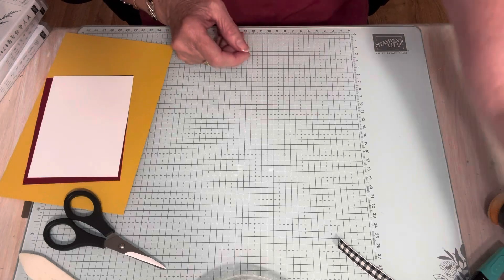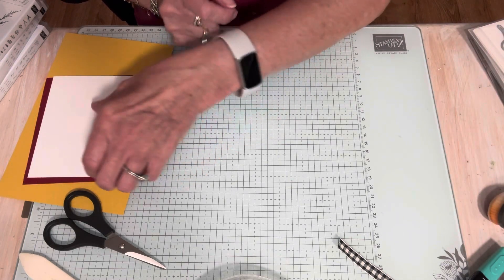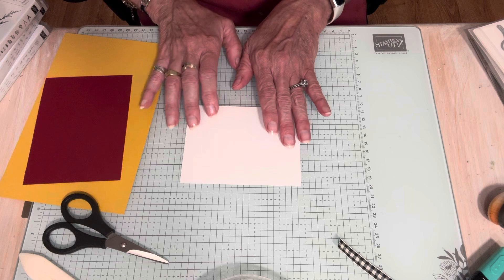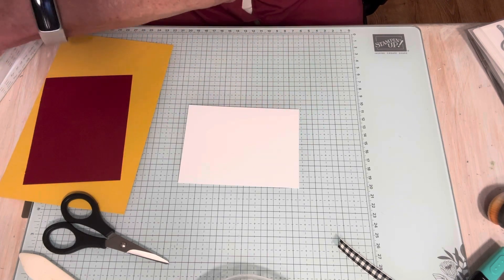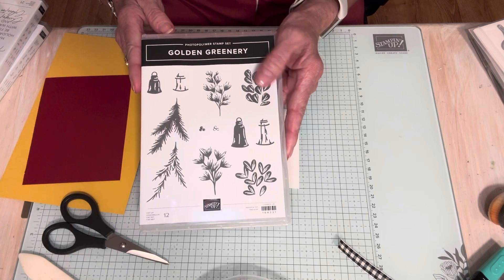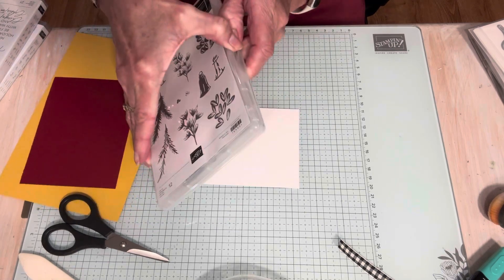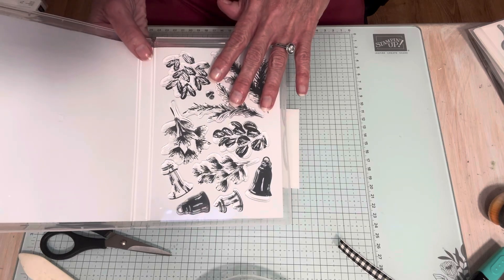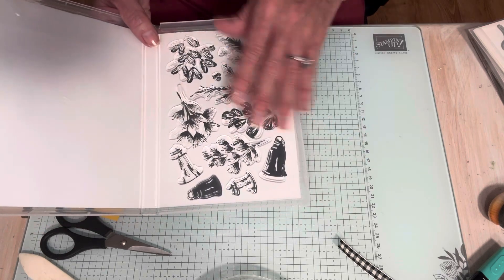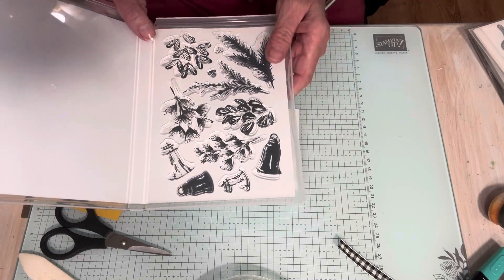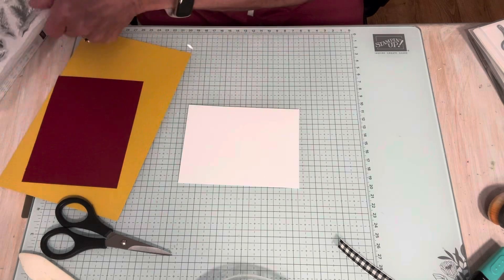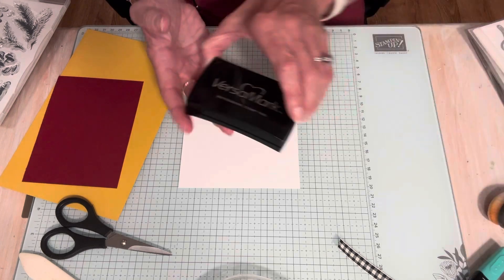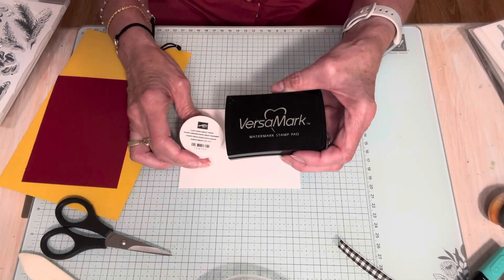I am going to show you the technique today. The technique I'm doing is Versamark. It's actually called heat emboss resist. So I'm going to be using the golden greenery stamp set. So today I am going to use my heat tool. For this technique, you need three things. You need a Versamark pad, you need clear embossing powder, and you need a heat tool.